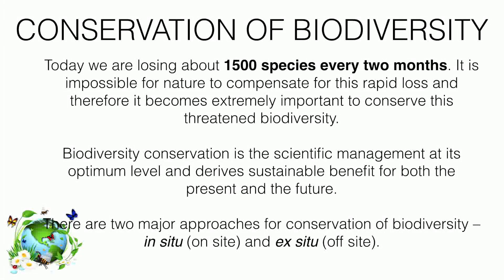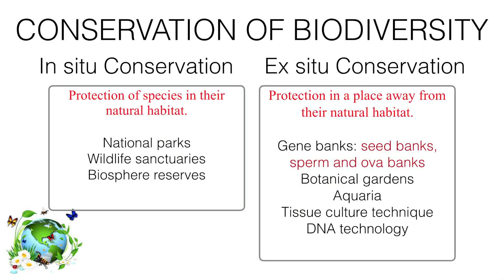In in-situ conservation, the protection of species in their natural habitats is the key principle — wherever they are living, we are protecting them in their natural habitat. Examples include national parks, wildlife sanctuaries, and biosphere reserves. Ex-situ conservation means protection in a place away from their natural habitats, such as botanical gardens and zoos.